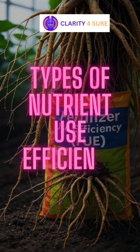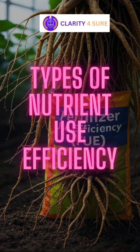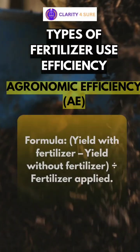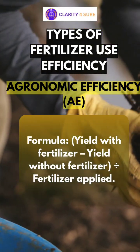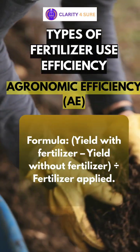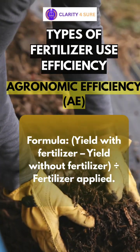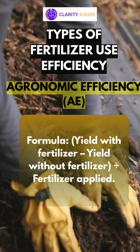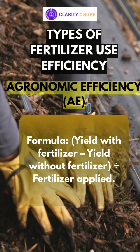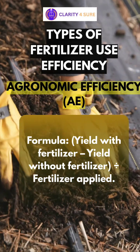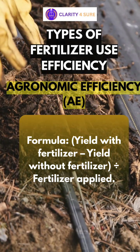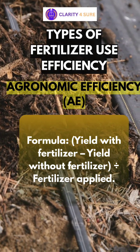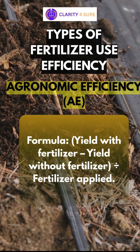In agronomy, there are different ways to measure how efficiently plants use nutrients. The first type is economic efficiency. The formula is: yield with fertilizer minus yield without fertilizer, divided by fertilizer applied. It shows the extra yield per unit of nutrient applied.